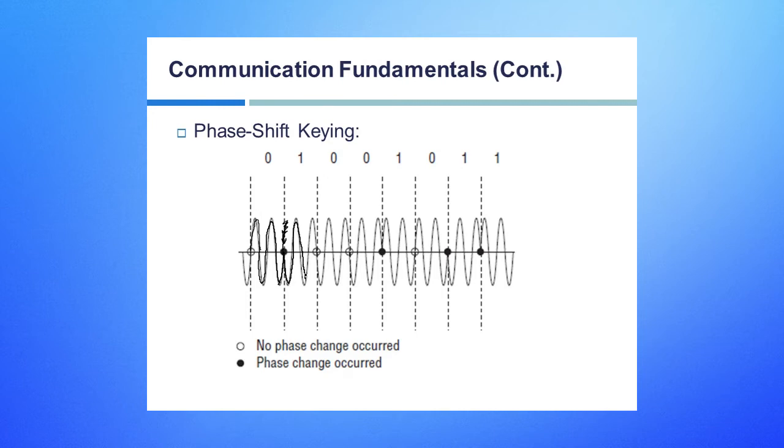How much we change the phase can help be an indication of whether we're sending a one or a zero, as you'll see with some other methods. But just the fact that the phase changed means that we are sending a one.